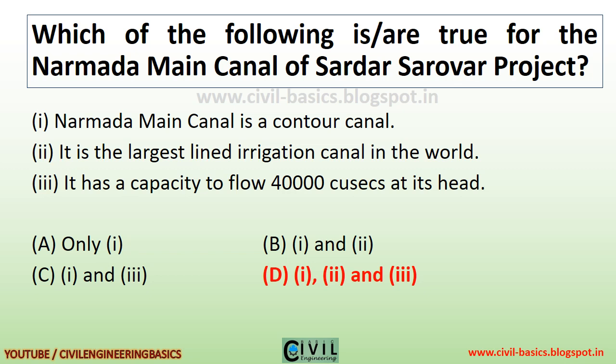Which of the following are true for the Narmada Main Canal of the Sardar Sarovar Project? Statement 1: Narmada Main Canal is a contour canal. Statement 2: It is the largest lined irrigation canal in the world. Statement 3: It has a capacity to flow 40,000 cusecs at its head. All statements are true for the Narmada Main Canal.